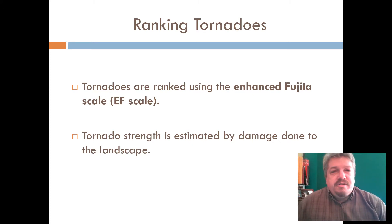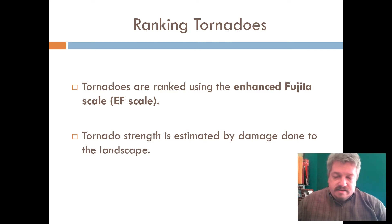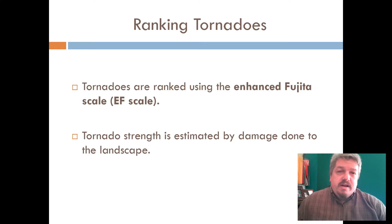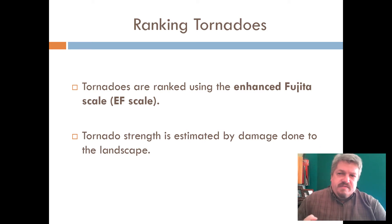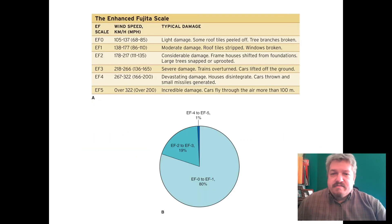We actually have to look at the damage done by the tornado to determine how strong the winds were. This is why many times you'll hear that there was a tornado, and initially they estimate its strength, then a couple days later they confirm how strong it really was. Scientists go out, look at the damage, and say it's an EF3 or EF4.